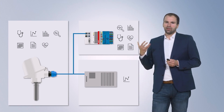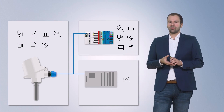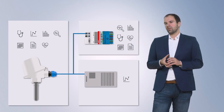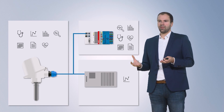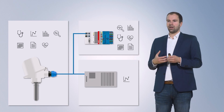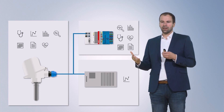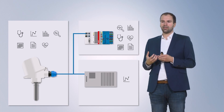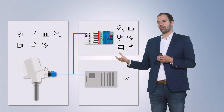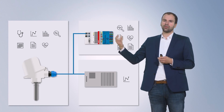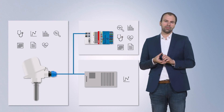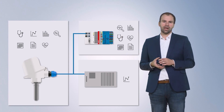Now we bring in the NOA Edge device, which reads all the additional information, converts the data, maps it to the NOA information model, and makes the data available to higher-level systems through an OPC UA server.